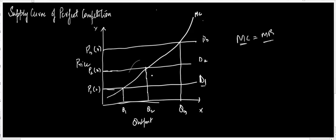The firm supplies each quantity at each price in order to equate marginal cost and marginal revenue. Since these demand curves are also the marginal revenue curves in perfect competition, as discussed in the previous video, the firm equates MC and MR at Q1 at price 2, Q2 at price 3, and Q3 at price 4. In perfect competition, the marginal cost curve has an identical shape to the supply curve — the marginal cost curve itself becomes the supply curve of perfect competition.